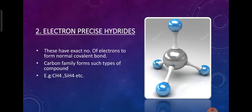The second class is electron-precise hydrides. These are hydrides which have the exact number of electrons required to form normal covalent bonds. The hydrides which have the exact number of electrons to form normal covalent bonds are called electron-precise hydrides. Generally, Group 14 elements — carbon, silicon, germanium — form these types of hydrides. Examples include CH4 and SiH4.